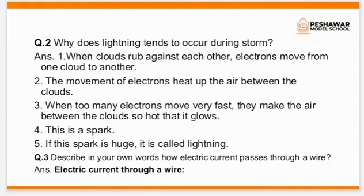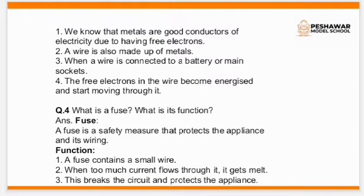Question number 3: Describe in your own words how electric current passes through a wire. Heading: Electric current through a wire. 1. Metals are good conductors of electricity due to having free electrons. 2. A wire is also made up of metals. 3. When a wire is connected to a battery or main socket, 4. the free electrons in the wire become energized and start moving through it.